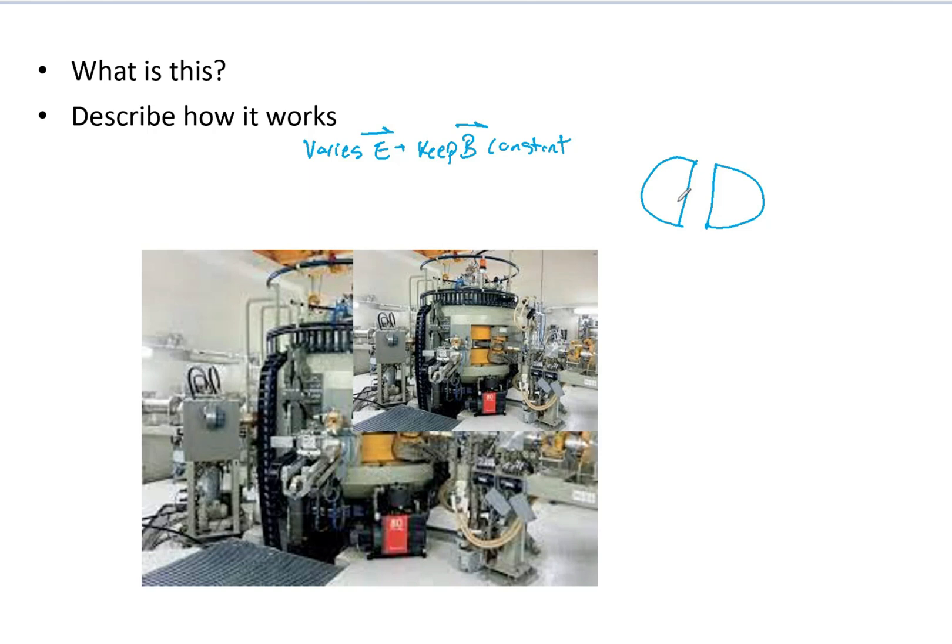Now the particle starts in the center of the magnet, so let's say starts right here, and that has an electric field of zero. Now this particle gains energy as it's accelerated, and the max energy is determined by the diameter of the revolution of the particle.